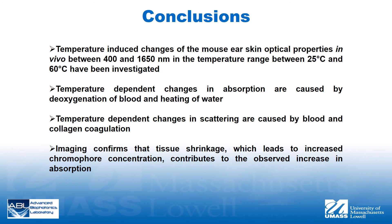Imaging reveals tissue shrinkage during heating from 25 to 60 degrees Celsius, which leads to increased concentration of chromophores and explains the significant rise of absorption coefficients at 60 degrees Celsius compared to 25 and 36 degrees Celsius. The results of this study may provide a reliable foundation for dosimetry of therapeutic and diagnostic clinical procedures.